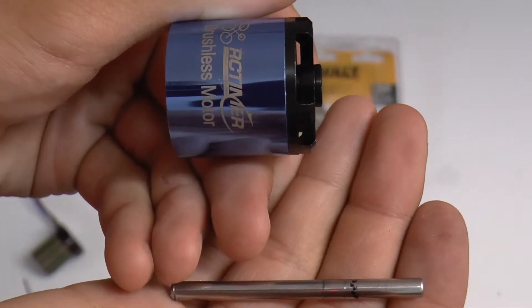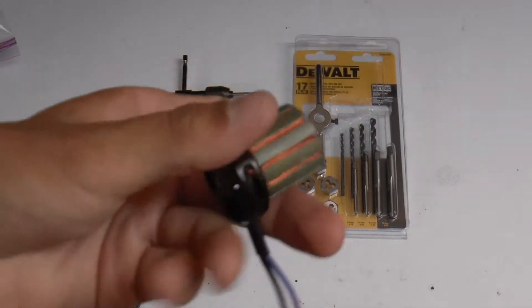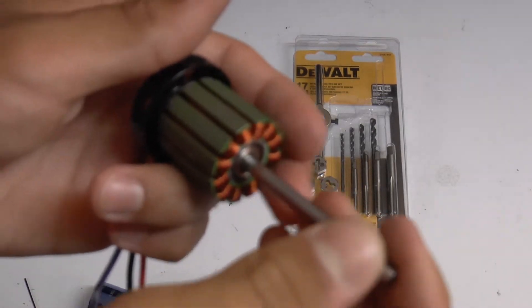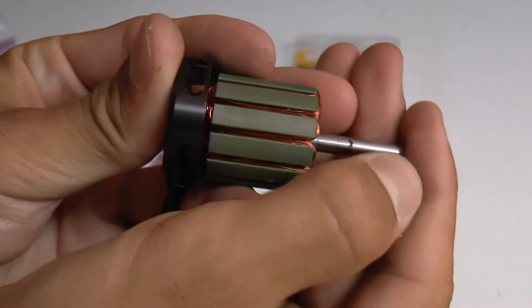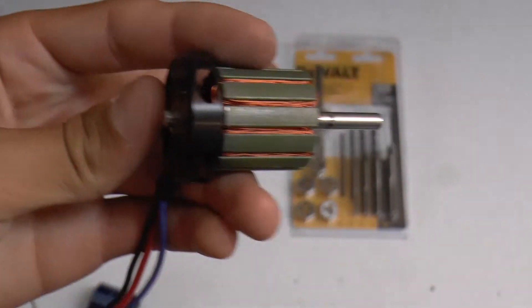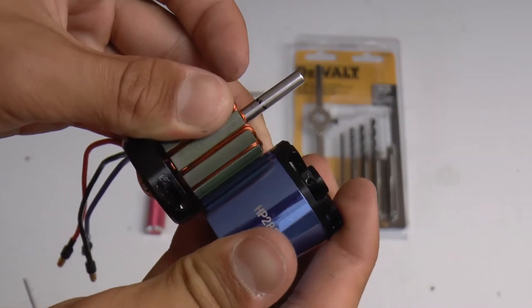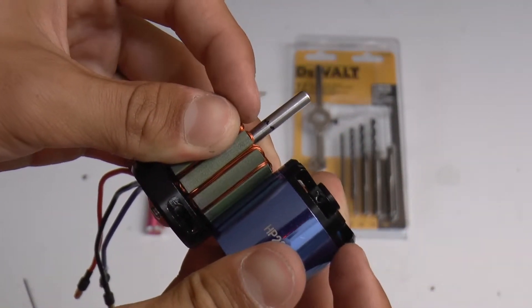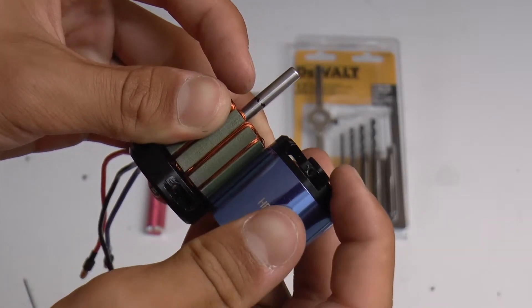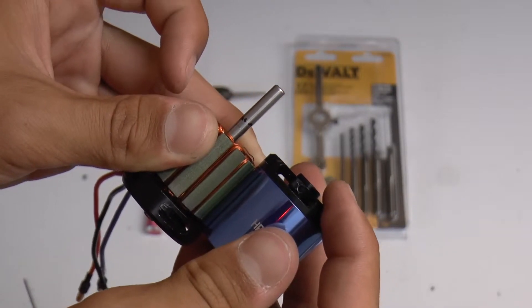Now that we have the shaft completely removed, I would recommend going ahead and taking this part of the motor, putting your shaft in, kind of mocking it up to where you would think it would sit, which would be right about there. Then go ahead and take this part of the motor, line it up where it sits, and make a mark on the shaft with a Sharpie or a prominent marker of where the grub screw will sit on the shaft, and you'll see why we need that mark in a few moments.